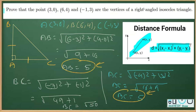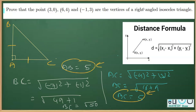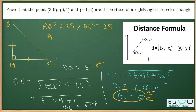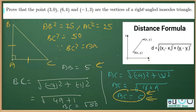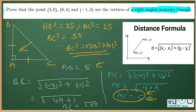Further we have to verify the Pythagorean relation, which says the square of the hypotenuse is equal to the sum of the squares of the other two sides. AB² = 5² = 25, AC² = 5² = 25, and BC² = (√50)² = 50. Clearly BC² = AB² + AC², since 50 = 25 + 25. By the converse of the Pythagorean theorem, the angle opposite to BC is 90 degrees. Therefore angle B is 90 degrees, and hence we prove that these are the vertices of a right angle isosceles triangle.